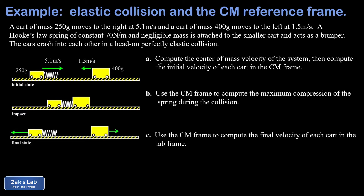The center of mass velocity comes from the total momentum of a system of moving objects. The total momentum p_net equals the total mass of the system — capital M — multiplied by the center of mass velocity. As the two carts move along the track, the center of mass changes position, and the center of mass velocity tracks how fast that center of mass moves.